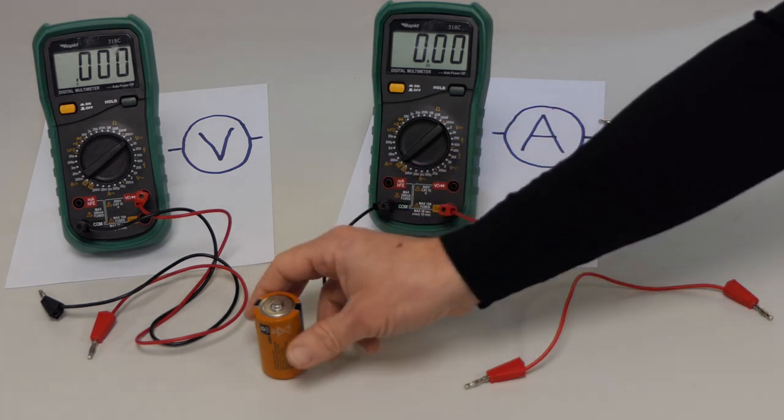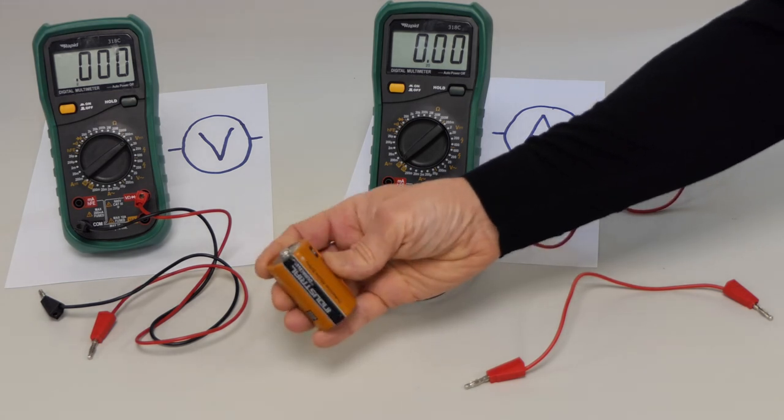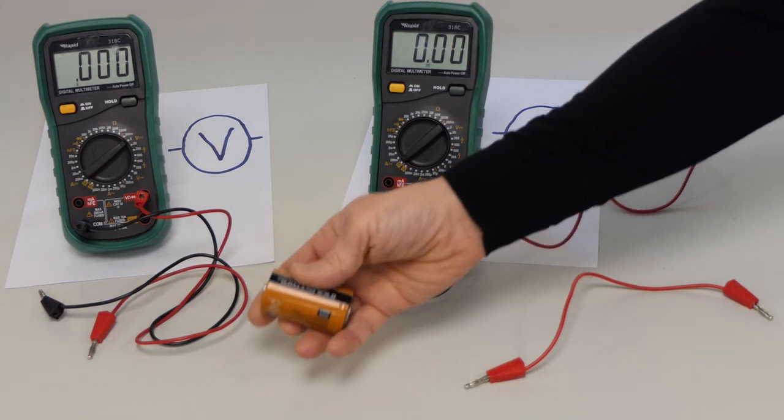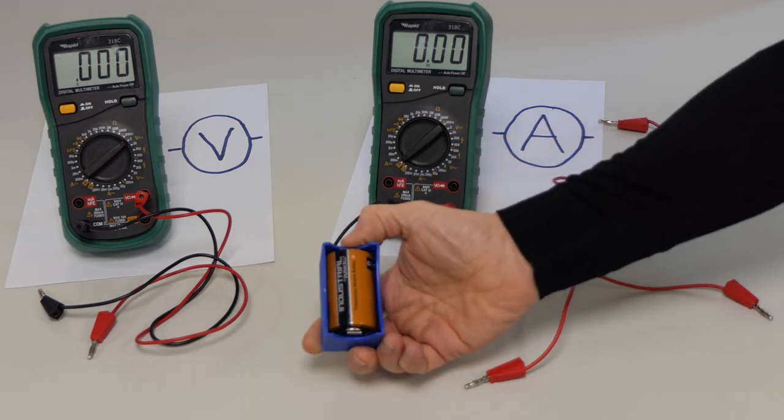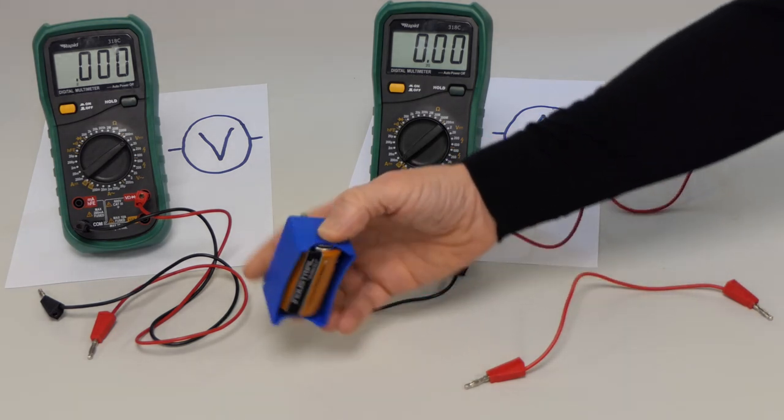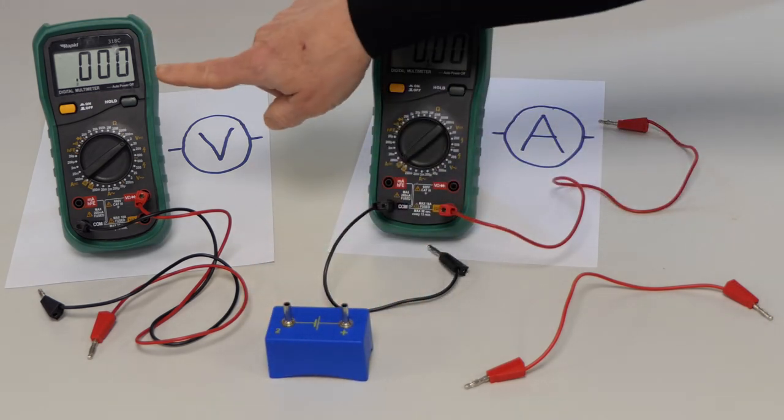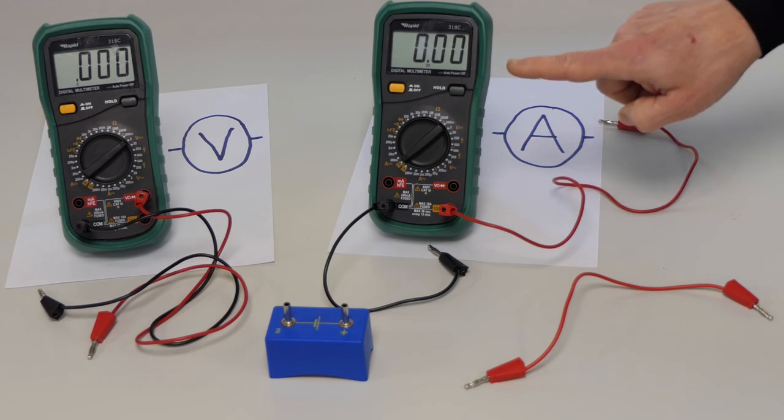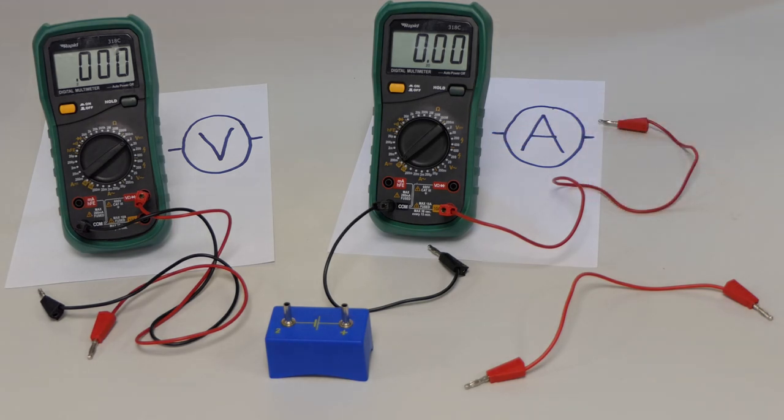I want to find out the internal resistance and EMF of this battery. I'll put the battery into this holder and I'll connect up a voltmeter and an ammeter to measure the terminal voltage and current drawn from the battery.